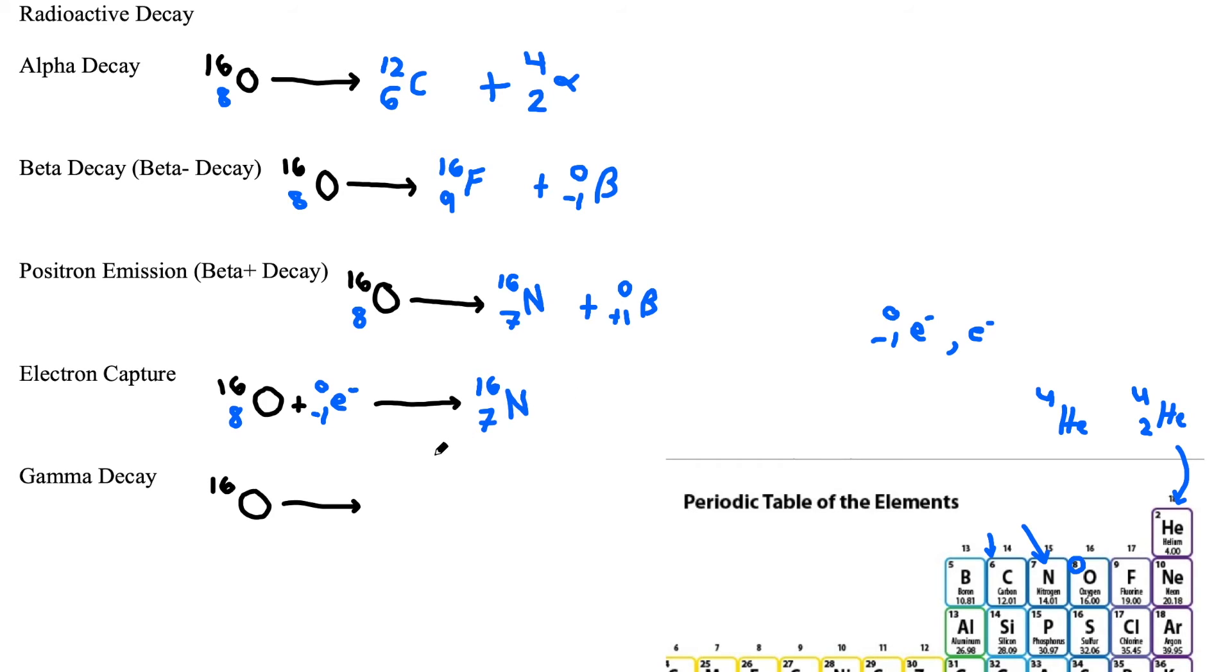Finally, we have gamma decay, which is probably the easiest one. This doesn't actually emit any beta particles, alpha particles, anything of that sort. It just releases something called a gamma particle, which is a high energy photon. So really all this is is a little wave of light in the gamma range. And if you remember the electromagnetic spectrum, also another high yield MCAT topic, a gamma wave is in the electromagnetic spectrum at the highest frequency.